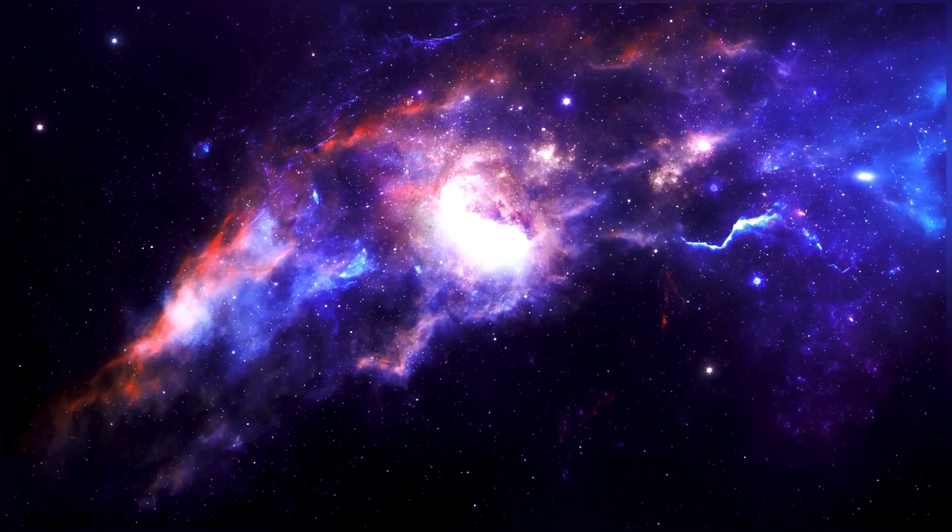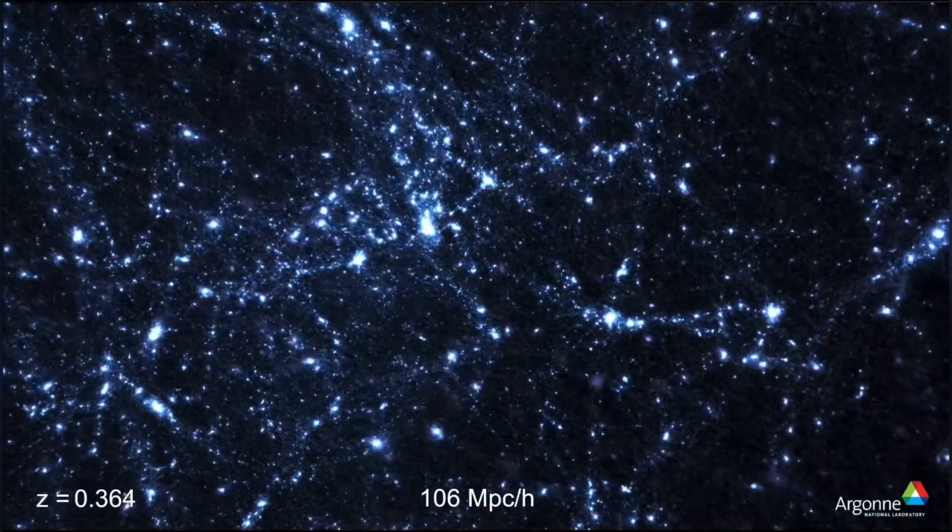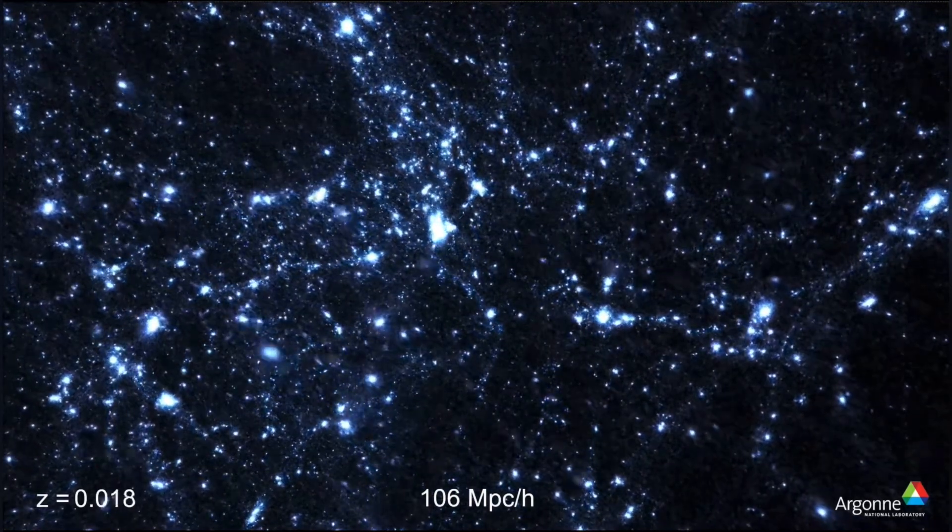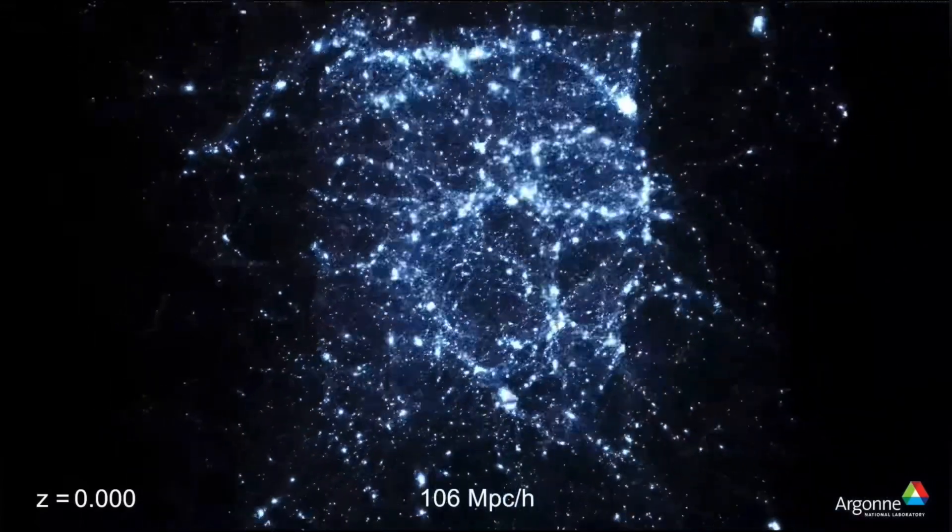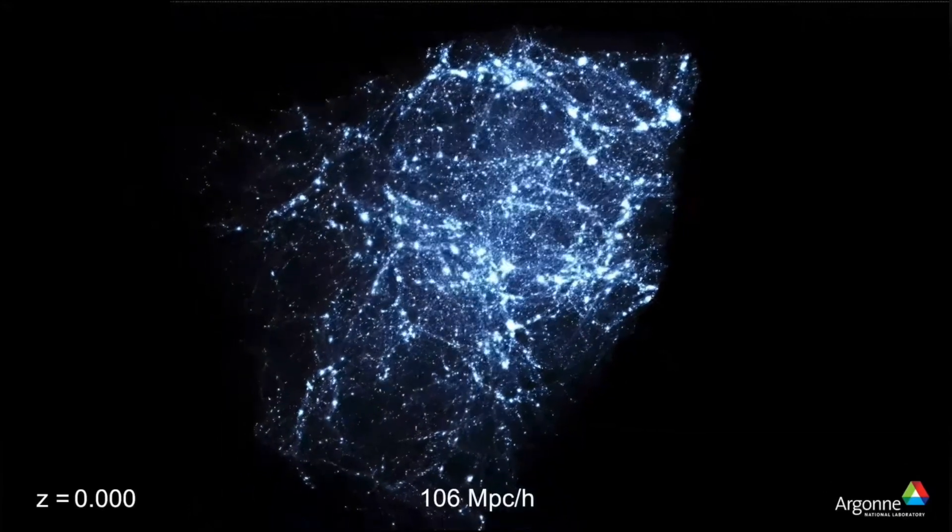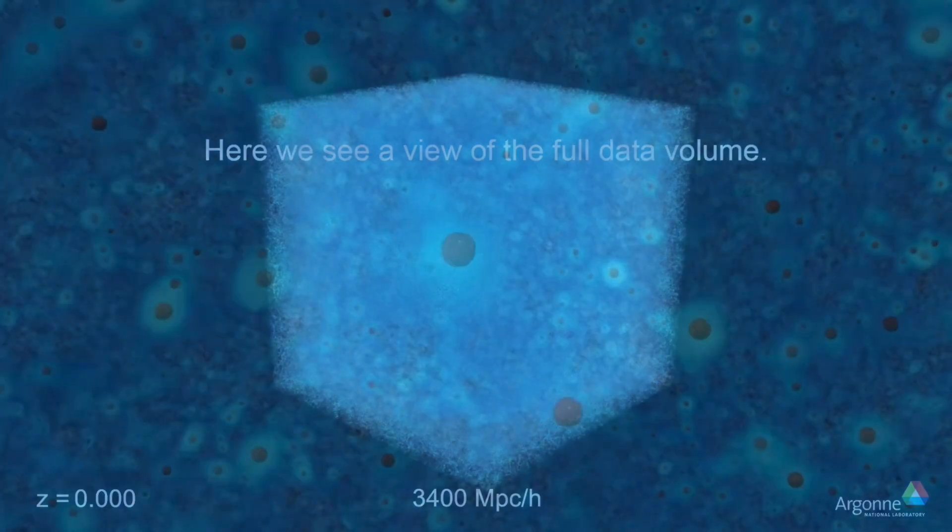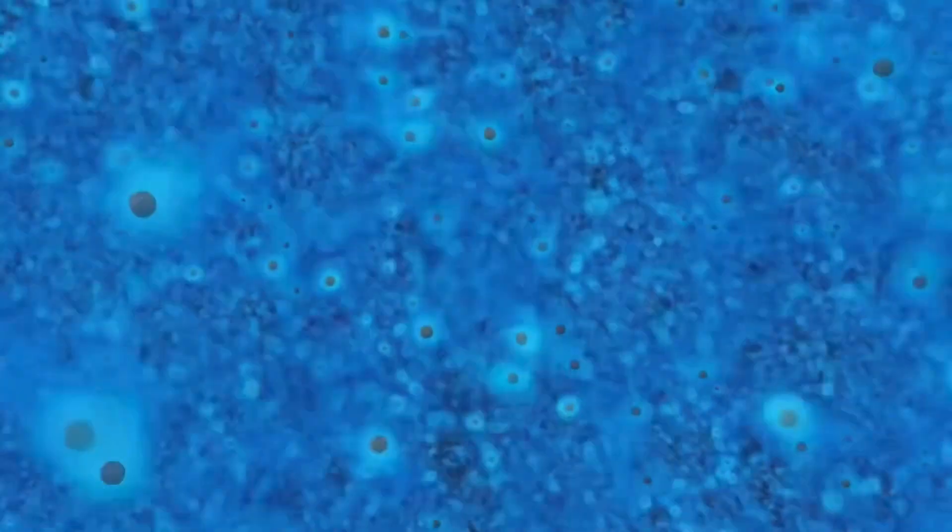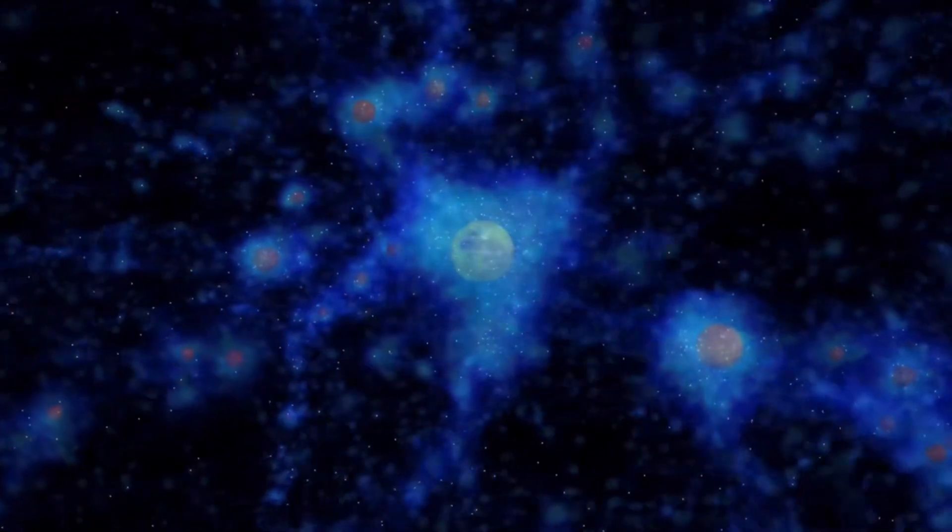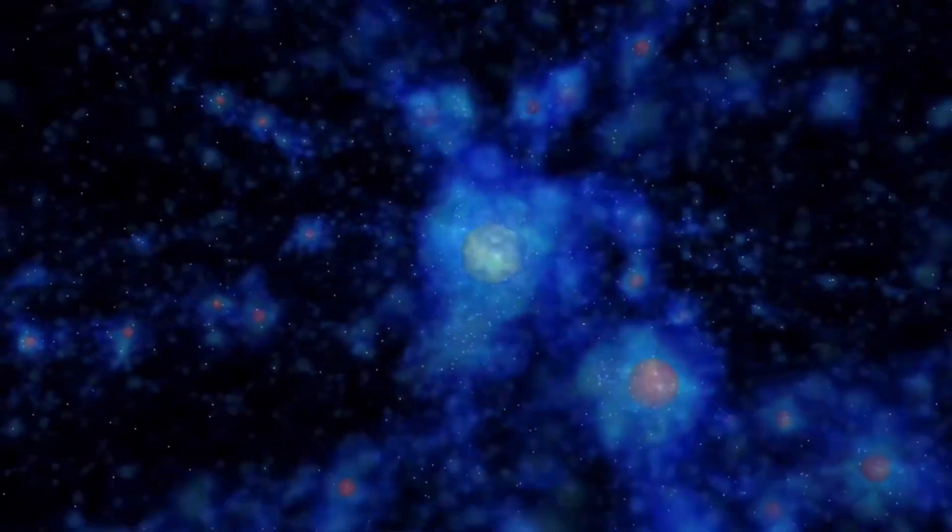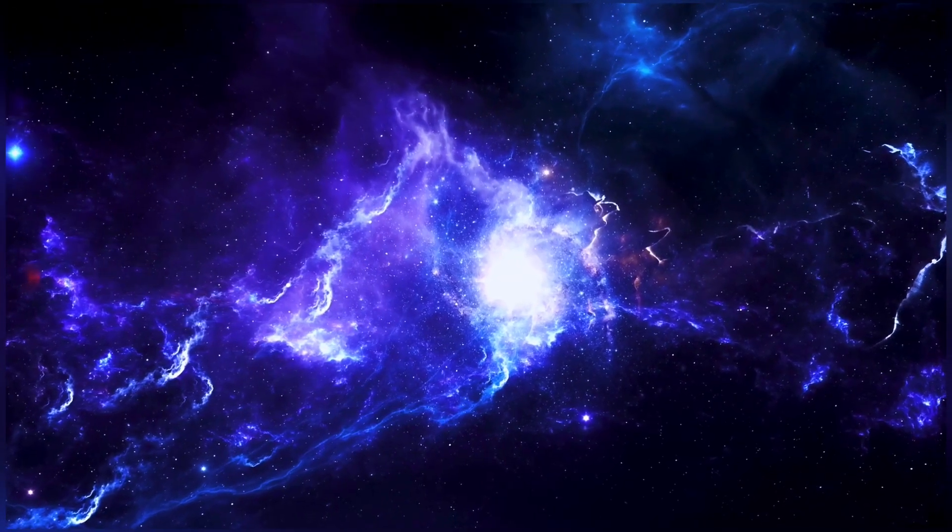Behold the cosmic threads that weave galaxies together: the cosmic filaments. Spanning billions of light years, these interconnected highways of cosmic matter form a grand tapestry known as the cosmic web. Discovery of structures larger than superclusters began in the late 1980s. In 1987, astronomer Brett Tully of the University of Hawaii's Institute of Astronomy identified what he called the Pisces-Cetus Supercluster Complex. In 1989, the CFA2 Great Wall was discovered, followed by the Sloan Great Wall in 2003. Galaxies and clusters are strung along these filamentary structures, sculpting the vast landscape of our universe. These colossal tendrils define the very structure of space, shaping the distribution of galaxies and leaving us humbled by the interconnectedness of all things.